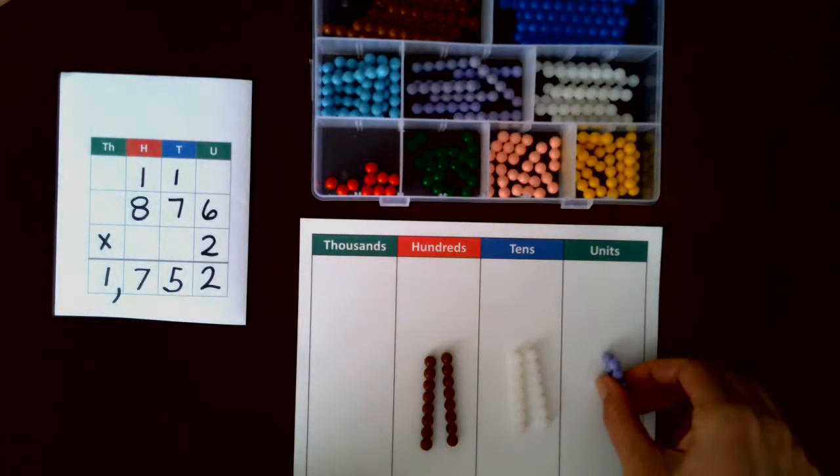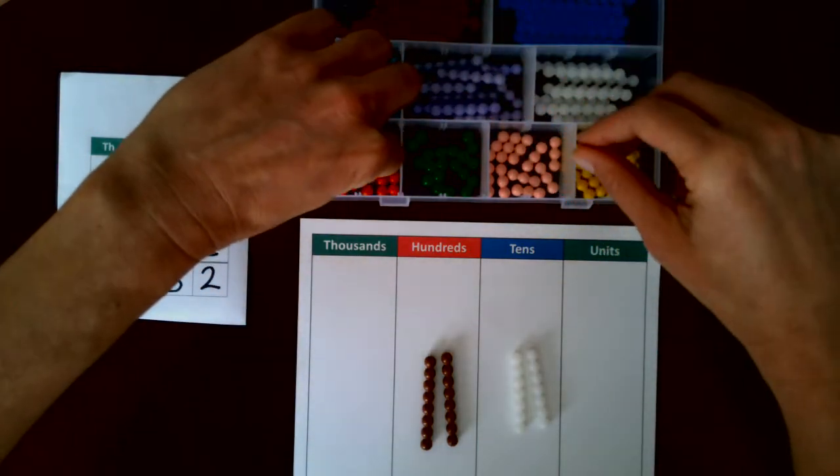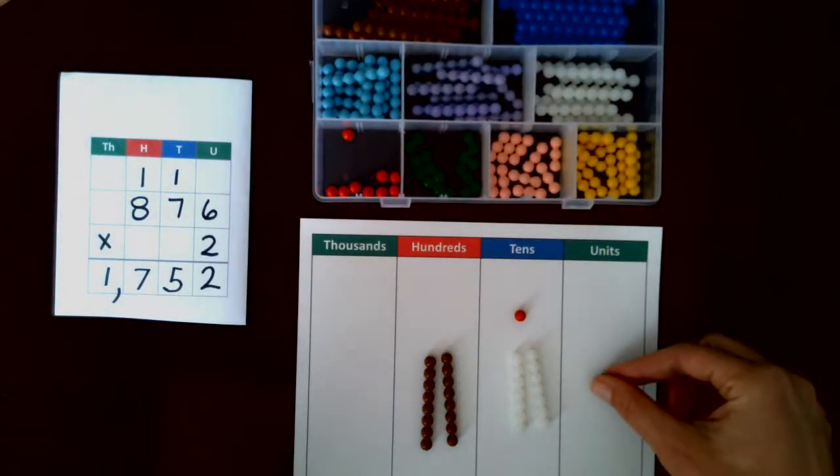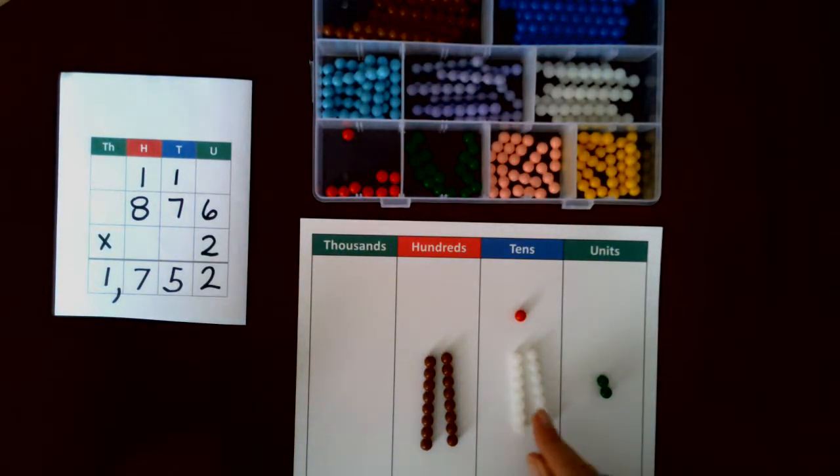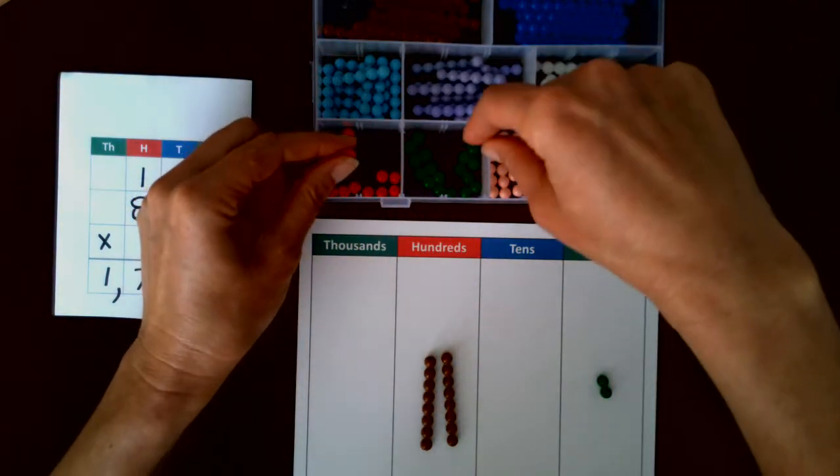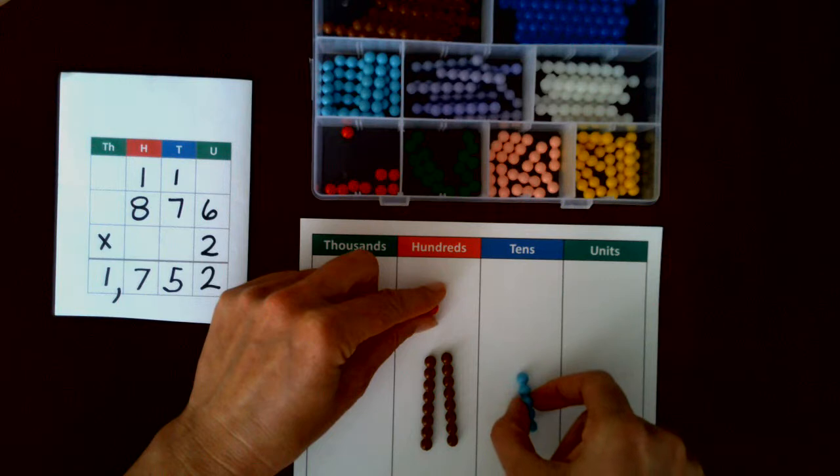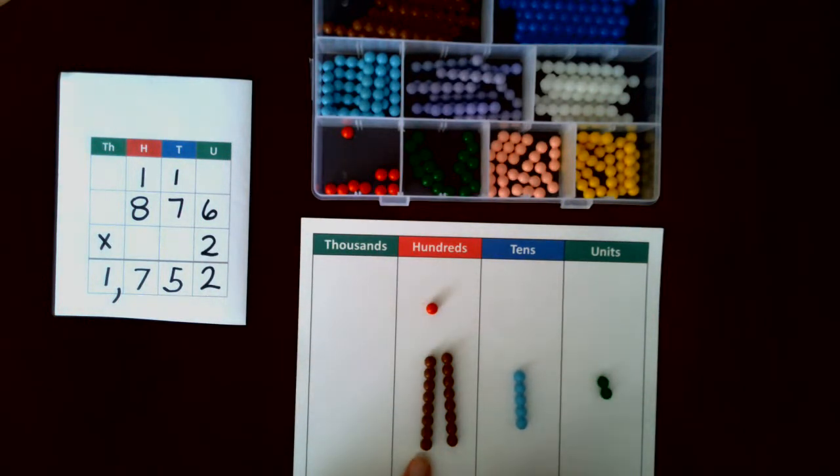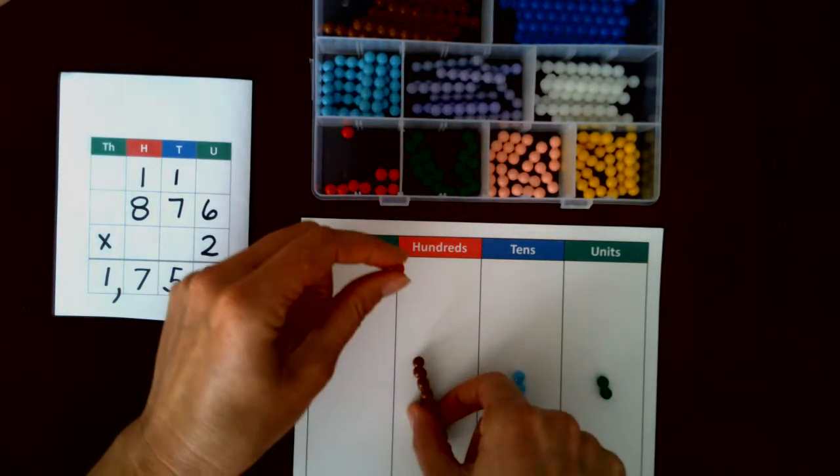Six and six is 12, we'll make that exchange, one and two. Seven and seven is 14 plus one is 15, we need to make an exchange, there's one and five.